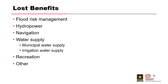Moving on to loss of benefits — often lesser-thought-about categories related to a project's authorized purposes. For example, J. Percy Priest Reservoir in Nashville is authorized for recreation, flood risk management, water supply, and hydropower. If that structure is damaged and cannot operate as intended, there are economic losses associated with each of those purposes. These benefits are very project-specific.